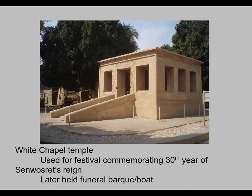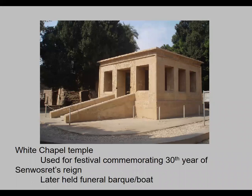They believed that after the pharaoh or nobility were buried, they would ascend through the pyramid into the heavens. One of their souls would travel every day in a boat following the sun, and come back every night. They would keep this boat in the temple so the soul could use it to ascend into heaven and go around the sun.